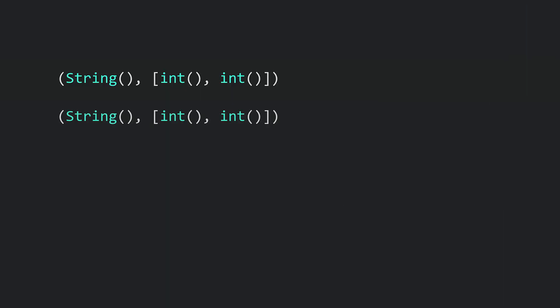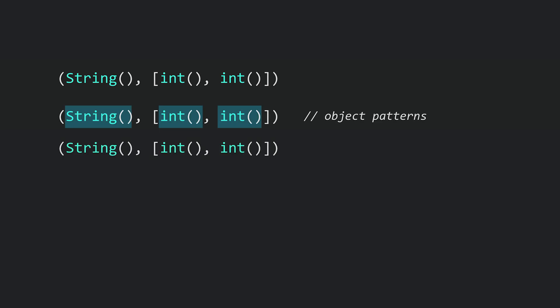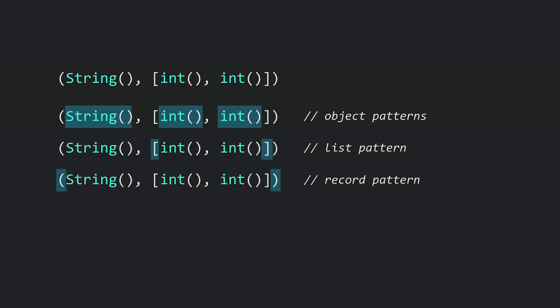The role of object patterns is to match instances of a certain type, and optionally some or all of their fields. Object patterns look like an unnamed constructor of the given type, even for objects that don't have an unnamed constructor. This means that for our previous example, we'd write this, using three object patterns nestled inside other patterns.